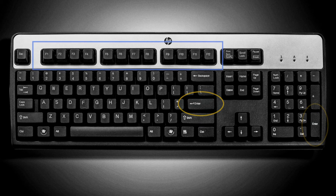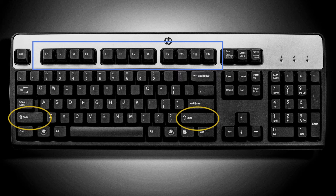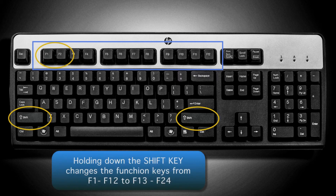The function keys are here, F1 through F12. The AS400 has function keys all the way up to F24. By holding down the Shift key and a function key, it maps to a higher key — F1 becomes F13, F2 becomes F14.